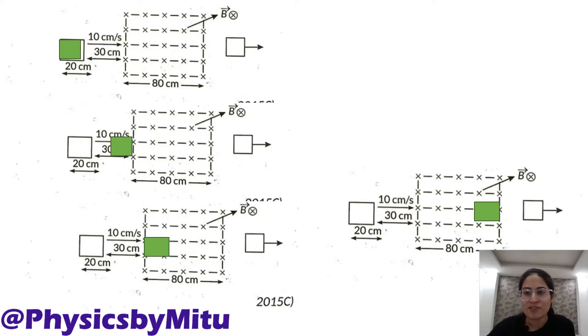We have to split this into various cases. First case, I consider the loop from this position to this position. When it comes from this position to this, there is no flux linked with the coil. Magnetic field region may toh aya hi nahi hai, toh flux link hoga hi nahi.